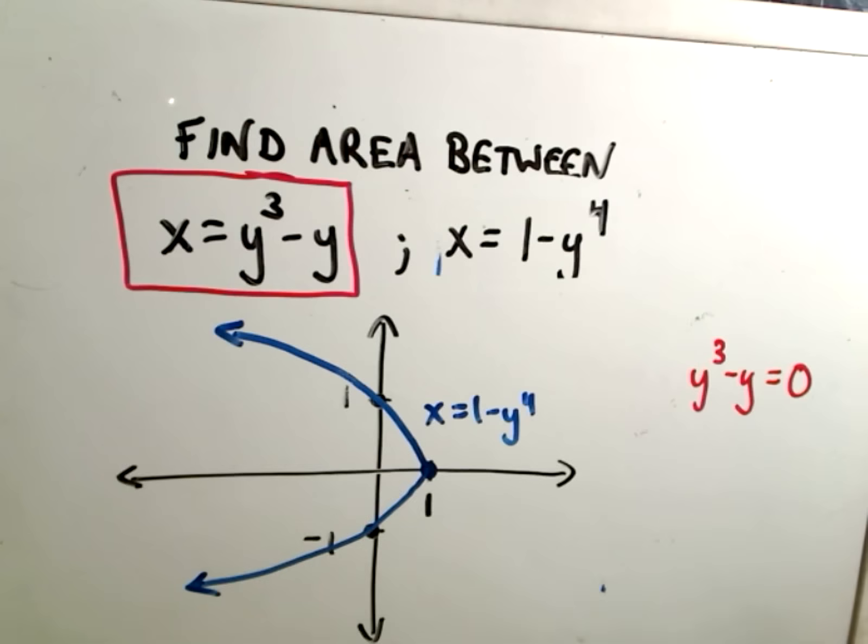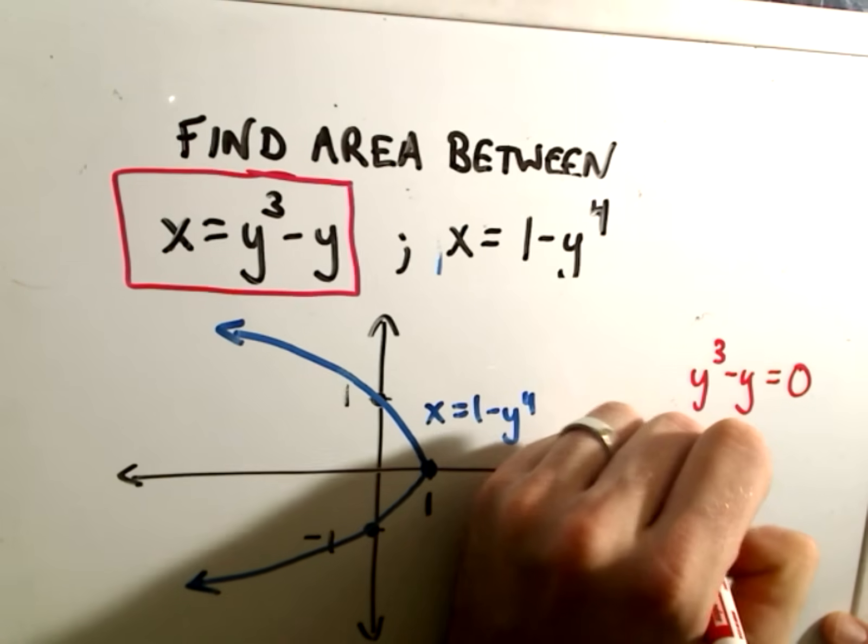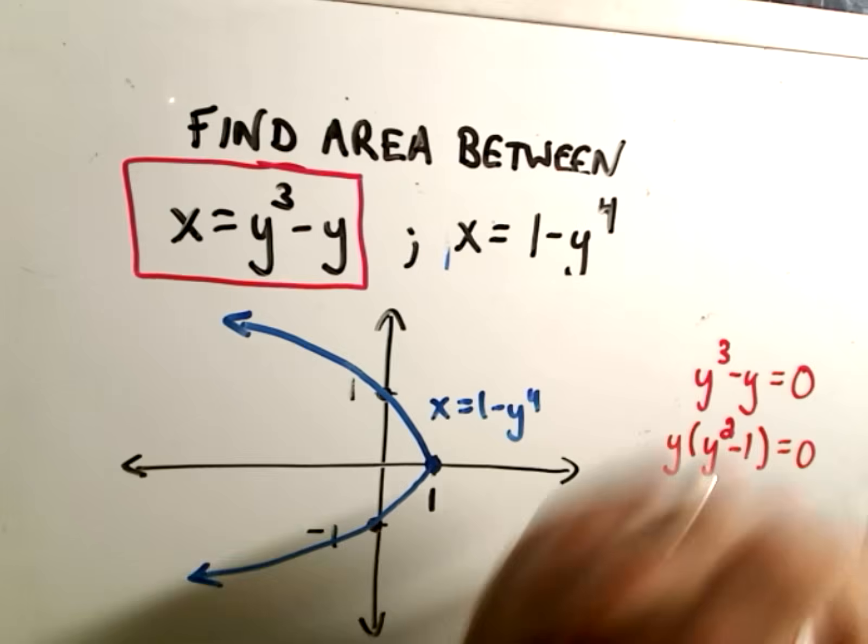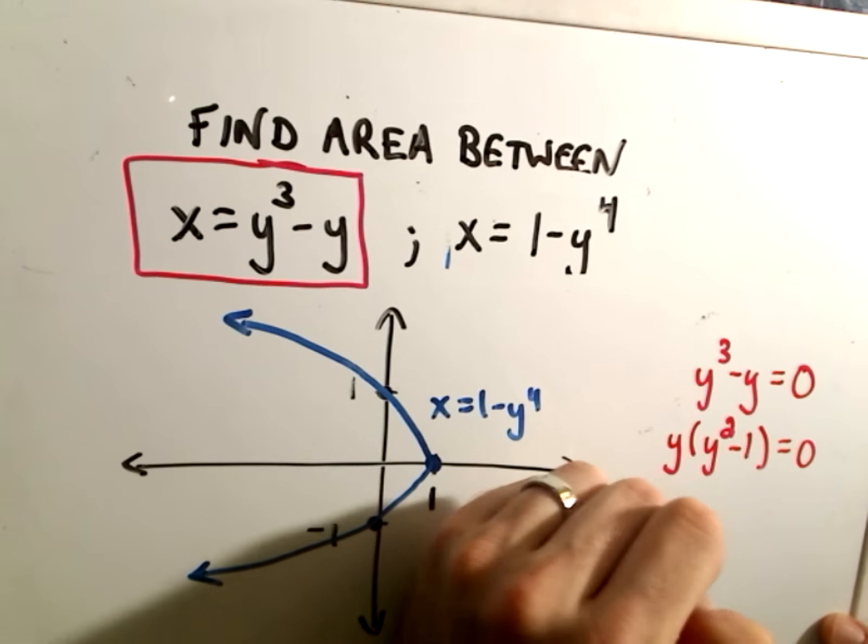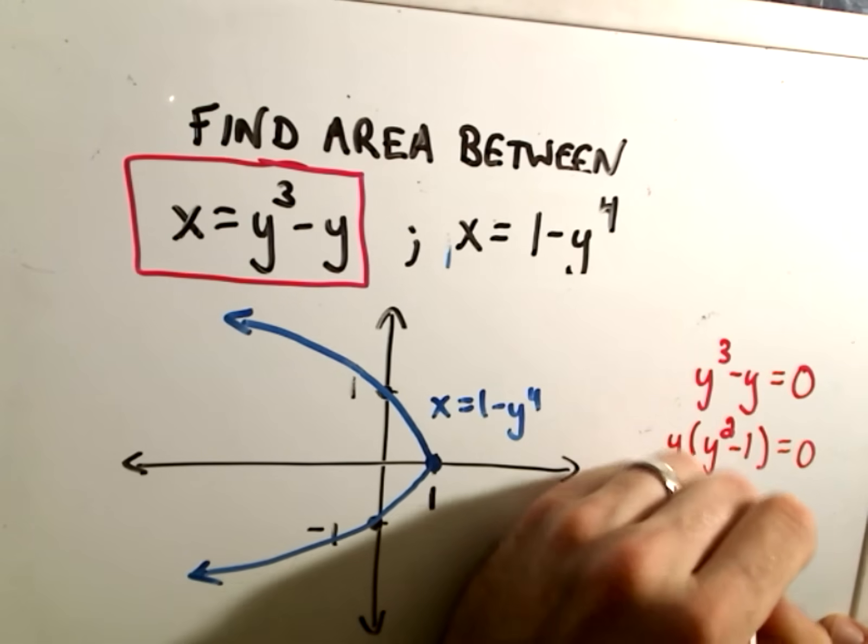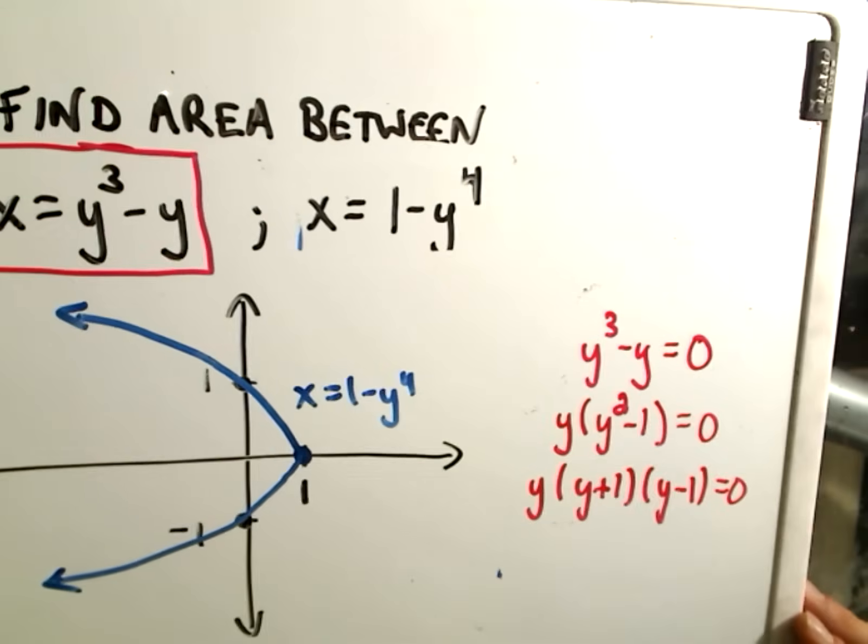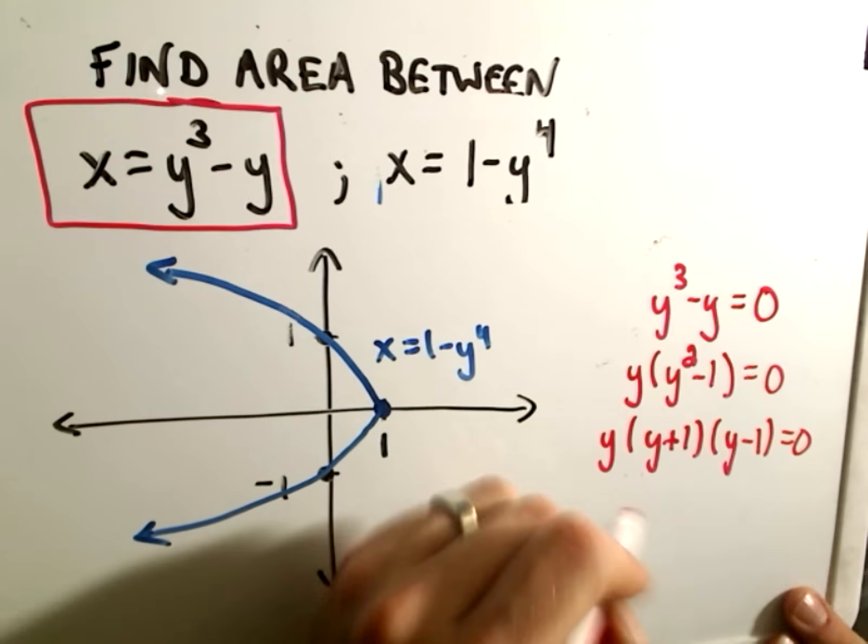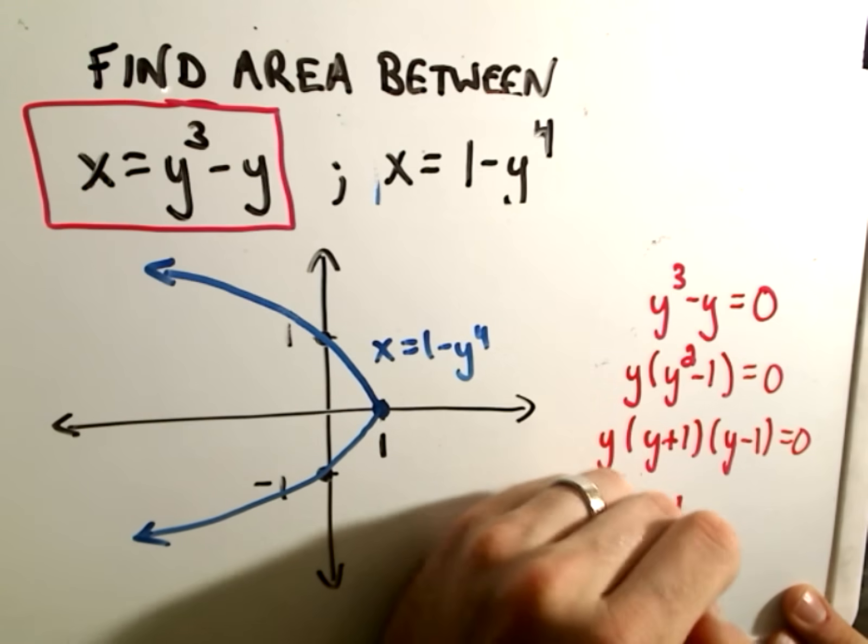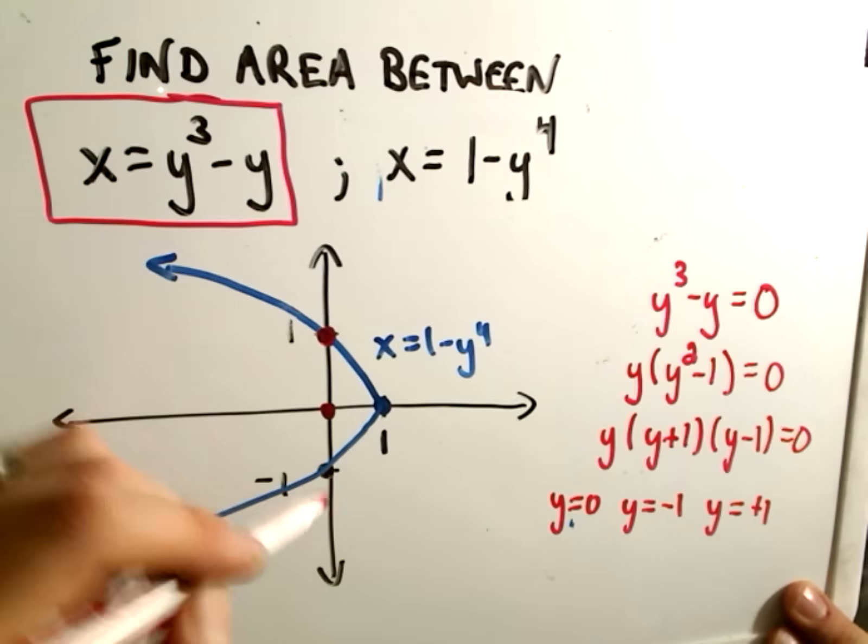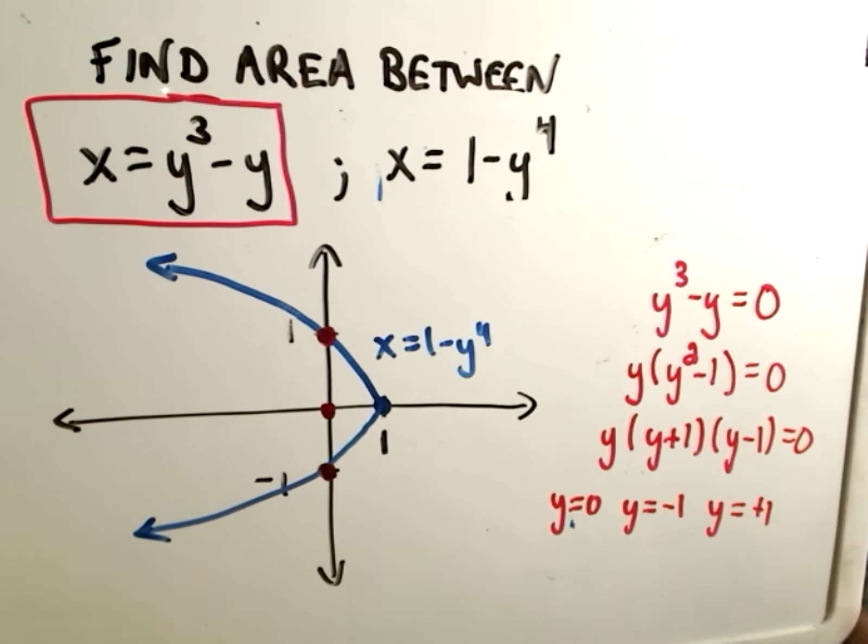So we'll figure out now where y equals zero. And notice if we solve for this, we can factor out a y. And then we'll have y squared minus one equals zero. And if we solve for that, we'll get y, y plus one, and y minus one equals zero. So those will be after we factor here. And if we set each piece equal to zero, we'll get y equals zero, y equals negative one, and y equals positive one. So it's crossing at positive one, negative one, and zero.